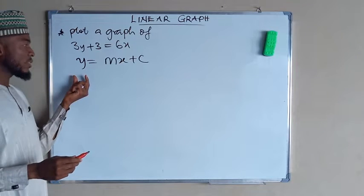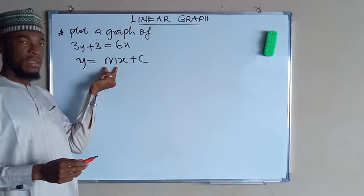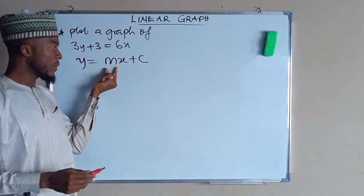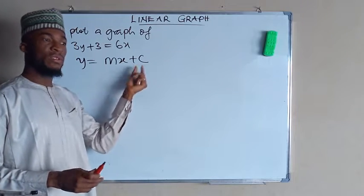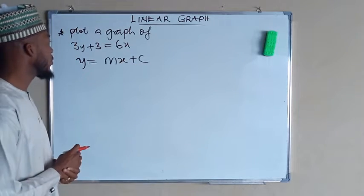This y is the function, this is slope m, and this is the intercept, which is the value of y when x is equal to 0.